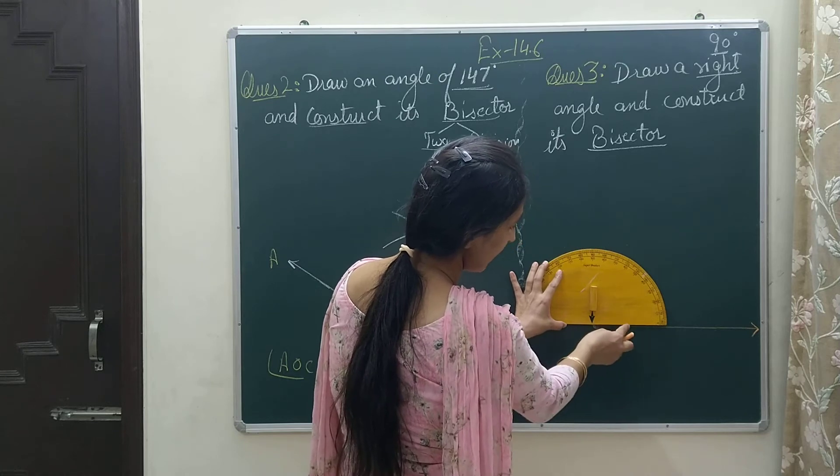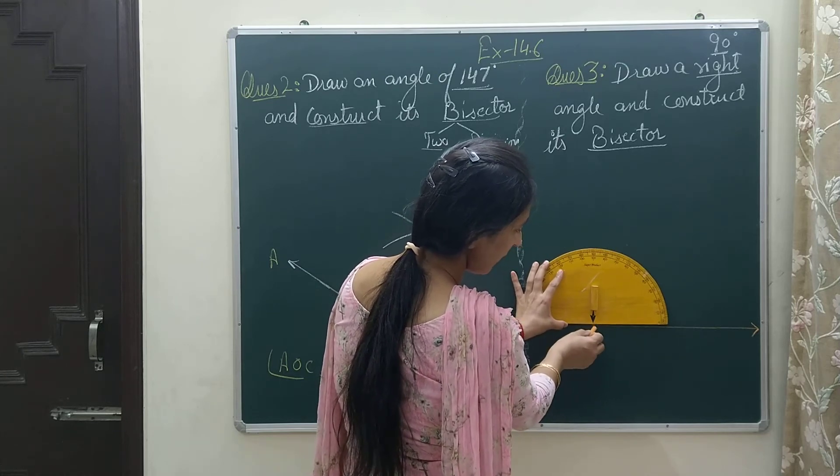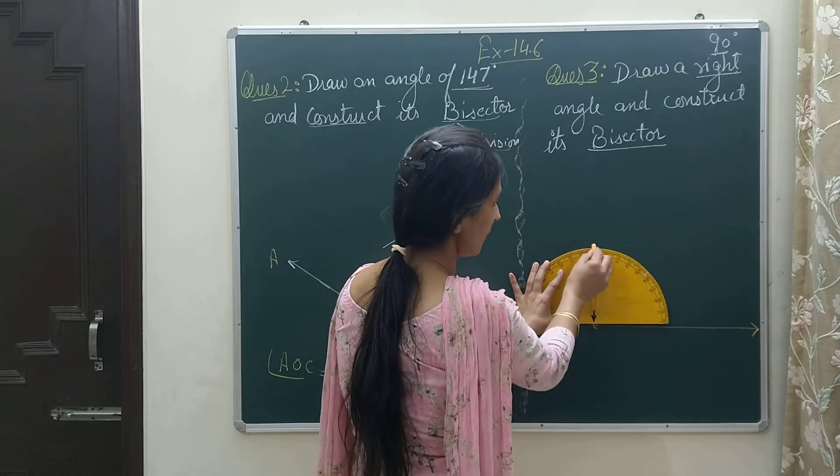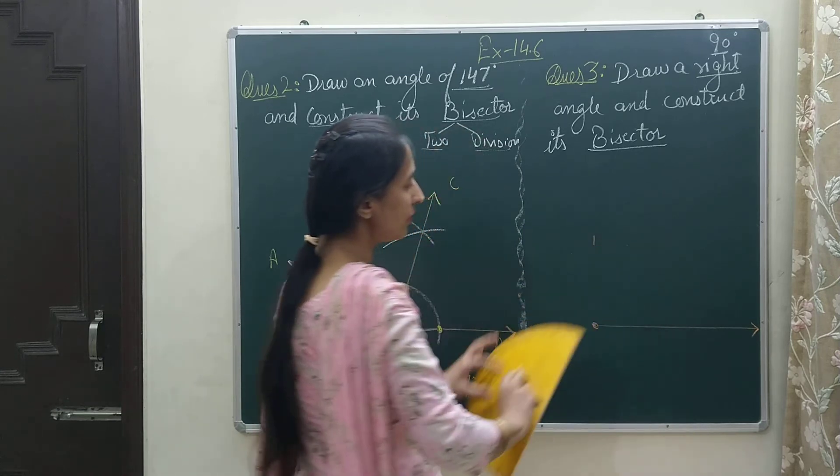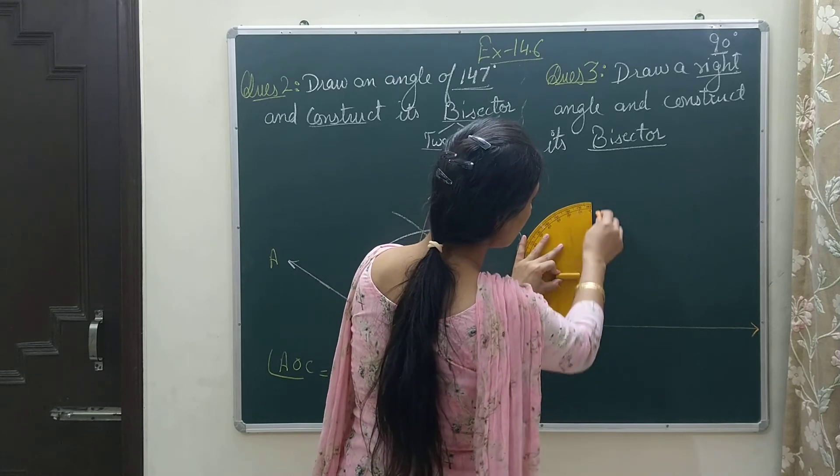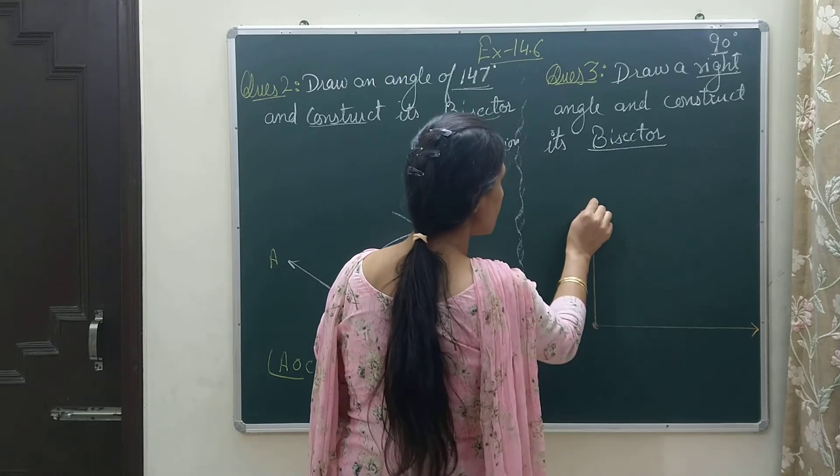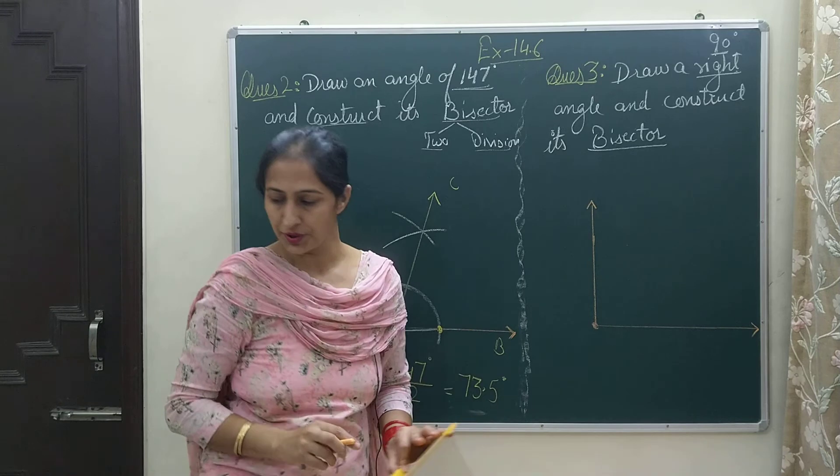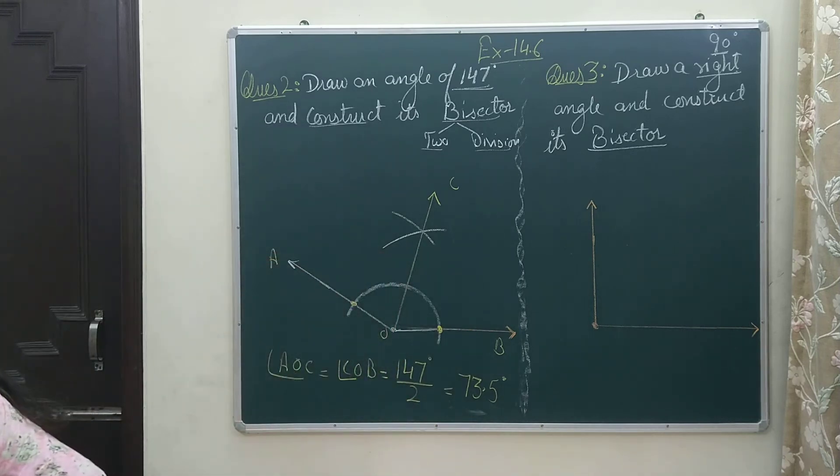Let us mark 90 degrees. I will match this line with the edge of this protractor and I will keep my arrow on this dot, and here is the arc for 90 degrees. Now I am going to join it, and here angle 90 degrees is drawn. Now I am going to bisect it.